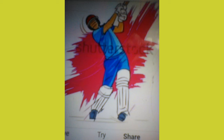12. Run out: if a fielder disturbs the stumps with ball in hand while the batsman is not in the crease after playing a shot, then the batsman is declared run out.